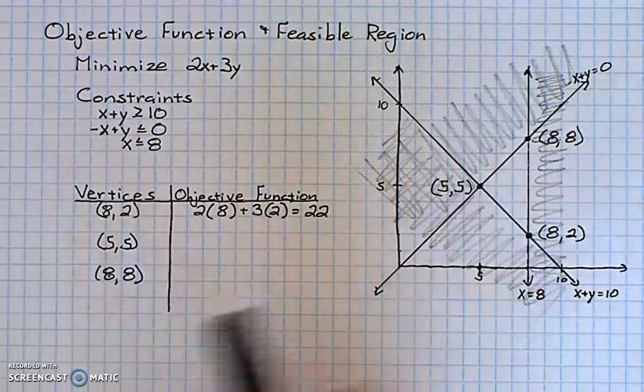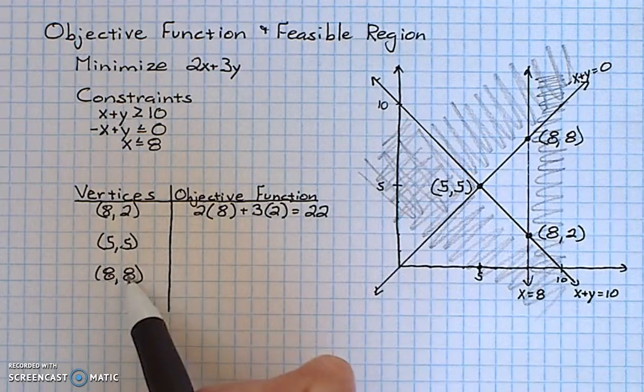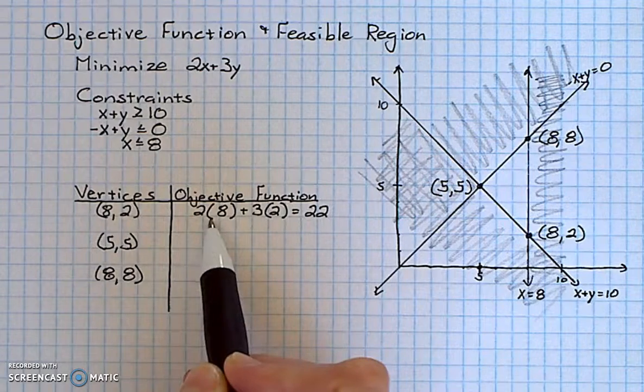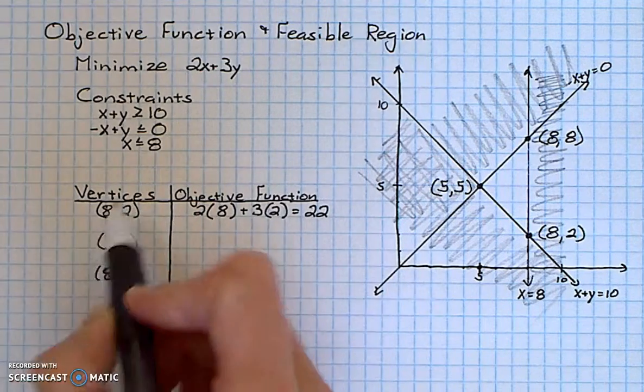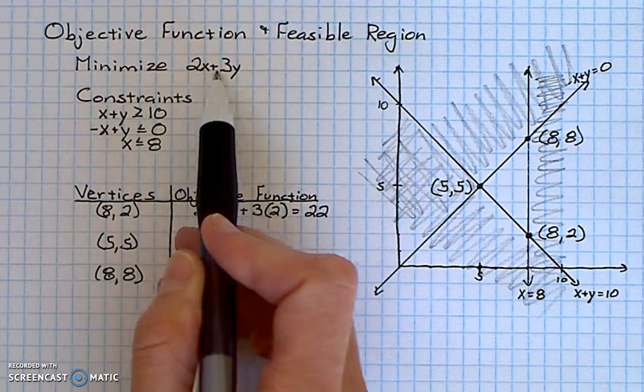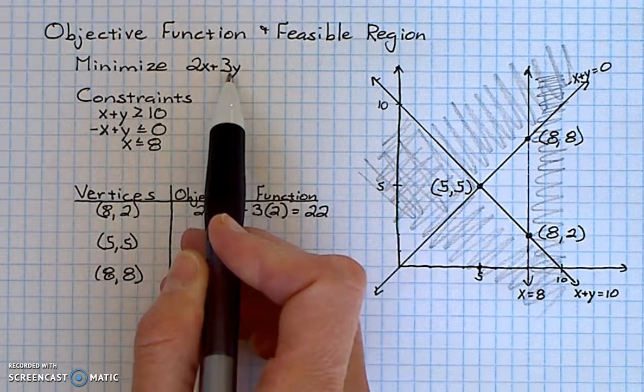What I need to do is take each vertex value and plug them into the objective function. The objective function was 2x plus 3y and I want to minimize it.